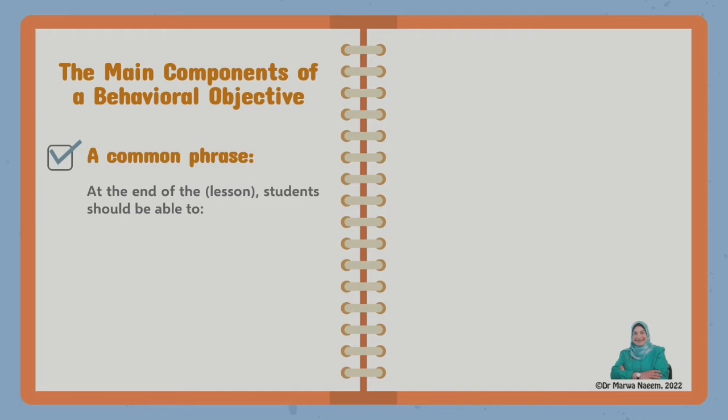And here we have some remarks. The word lesson is written between brackets because you can replace it with unit or course, whatever the content you are setting an objective for. Also we use should instead of must because we are talking about a desired outcome.